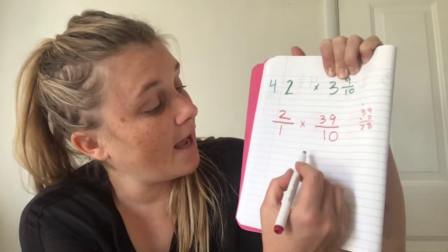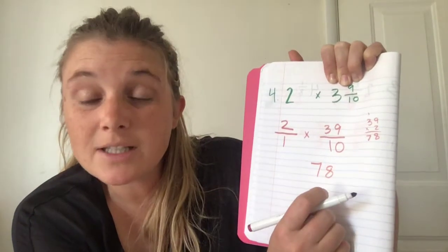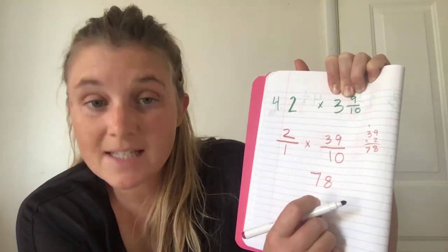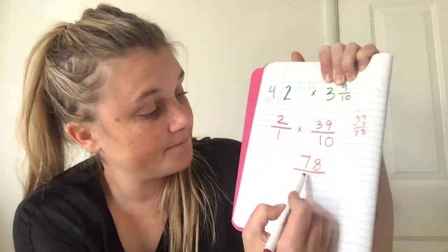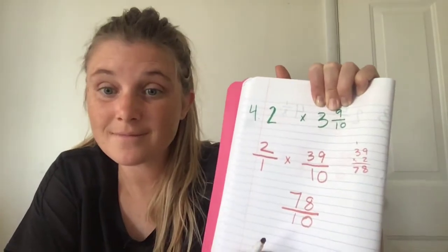Okay, so we have seventy-eight. We multiplied the numerators. Now, let's multiply the denominators. Ten times one is ten.